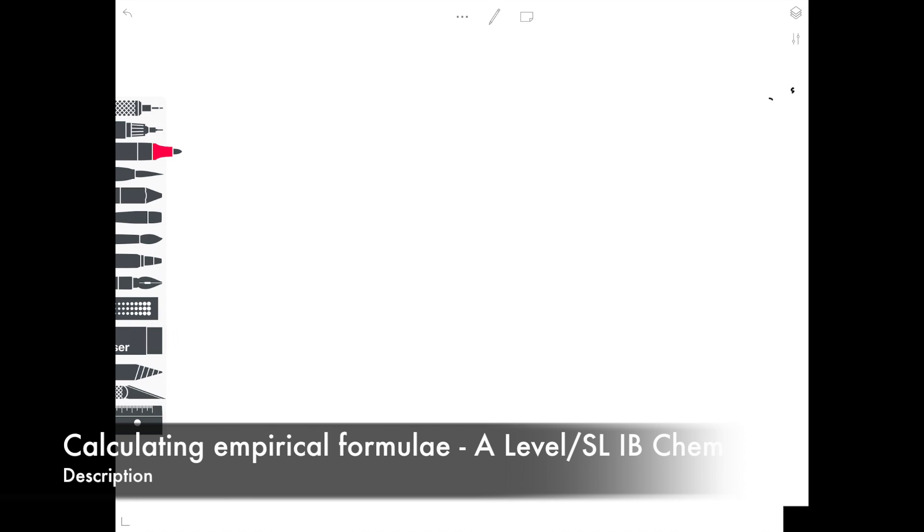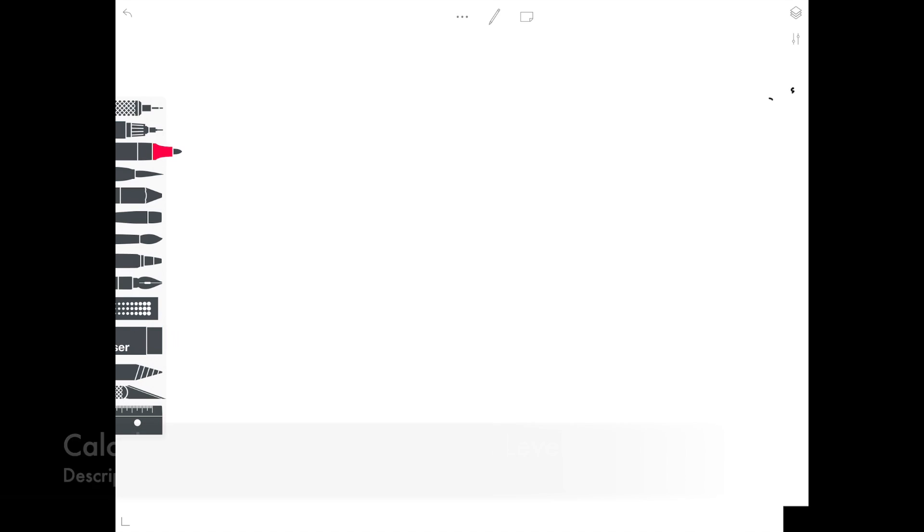In today's video we're going to be looking at calculating the empirical formulae of a compound. So let's just remind ourselves quickly of what that actually means. The empirical formulae is the simplest ratio of atoms of each element present in a compound.